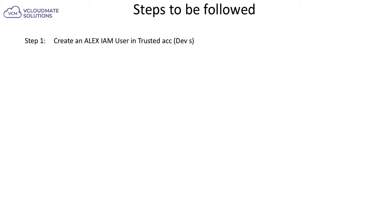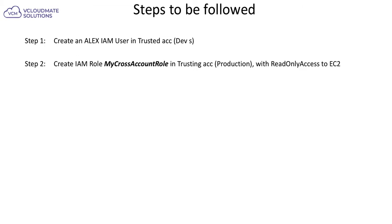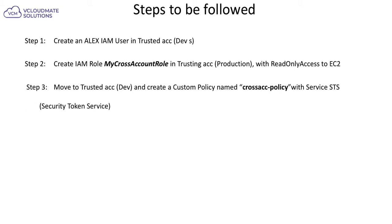First, we'll create user LX in the development account, the trusted account. Right after that, I'll create a role inside the production account — this is the role I need to assume — which I'll call the cross-account role. The policy will only allow reading EC2 instances in the production account. Then I'll move back to the development account and create a policy called cross-account policy using the service STS, the Security Token Service.